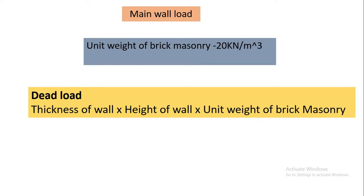For wall load, the self-weight of the main wall is calculated using the height and thickness of the wall multiplied by the unit weight of brick. Similarly, partition wall thickness and parapet wall height are used for their respective calculations. We calculate self-weight for beam, column, slab, and walls including main wall, partition wall, and parapet wall.